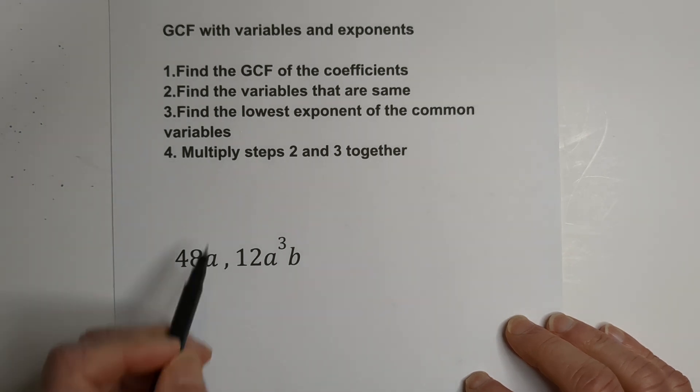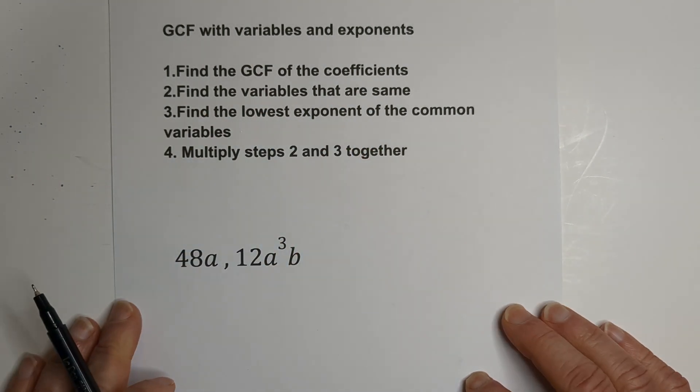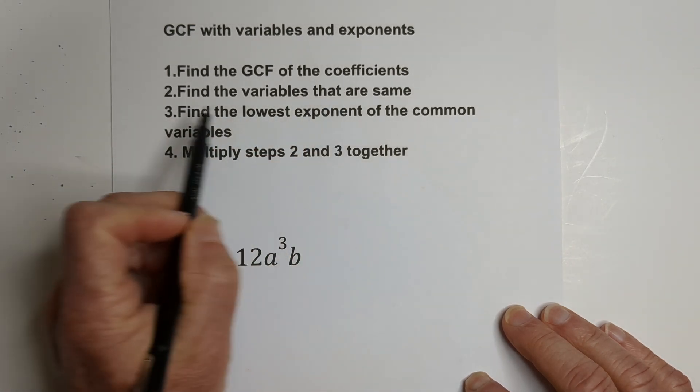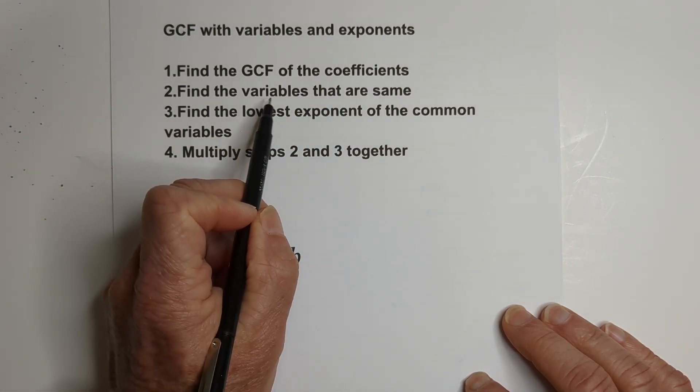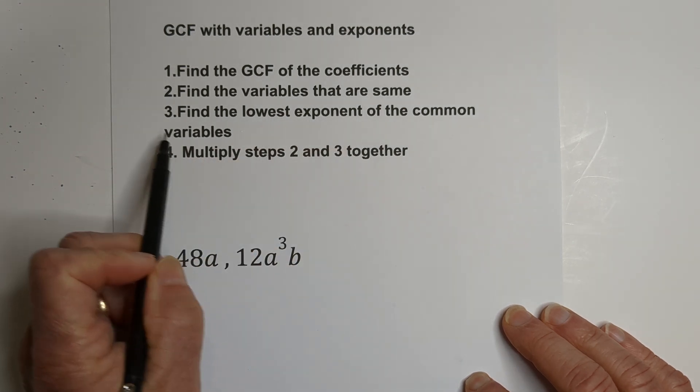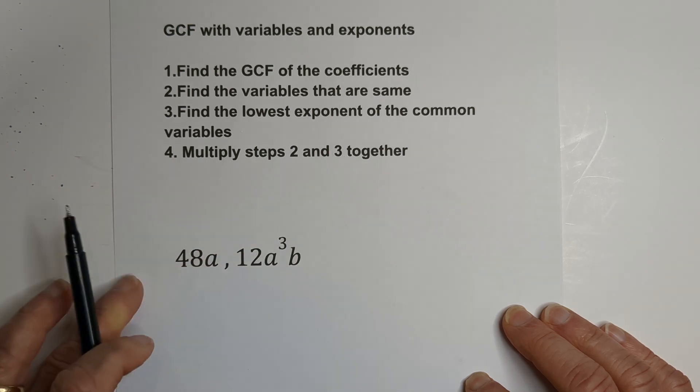Technically, these are monomials, but they contain variables and exponents. So first we're going to find the GCF of the coefficient, then we're going to find the variables that are the same, then we're going to find the lowest exponent of the common variables, and then multiply steps two and three together.